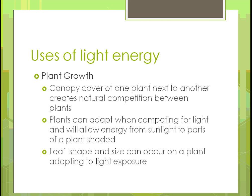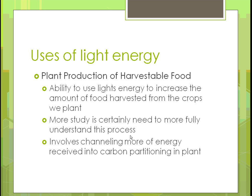For plant growth, the canopy of one plant can create natural competition between plants. If one plant grows faster, it can block sun from reaching slower-growing neighbors, preventing them from reaching their full potential by competing for sunlight needed for photosynthesis. Plants can sometimes adapt by directing energy from sunlight to shaded parts of the plant. The leaf shape and size of a plant can also affect how well it adapts to different light exposure levels.